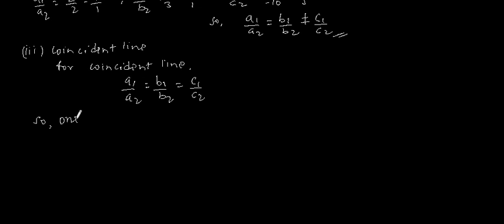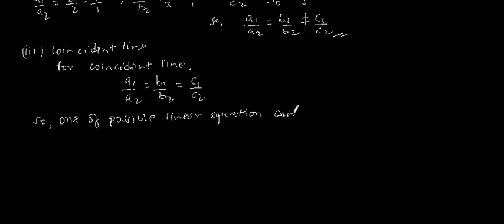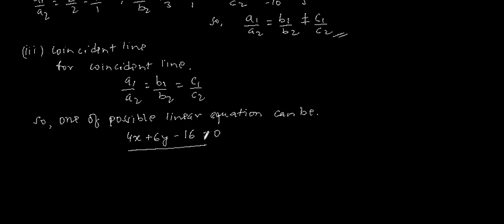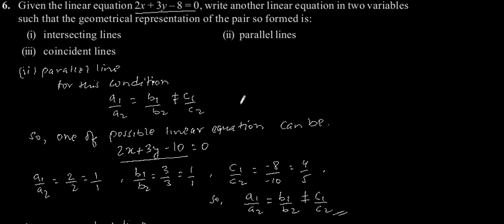So one of the possible linear equations can be 4x plus 6y minus 16 is equal to 0. Now considering this equation and the given equation, that is 2x plus 3y minus 8 is equal to 0.